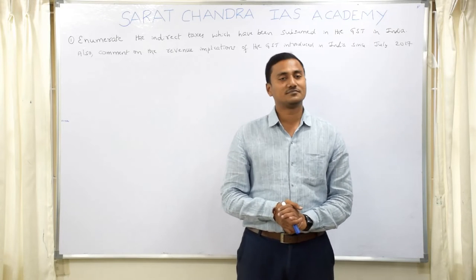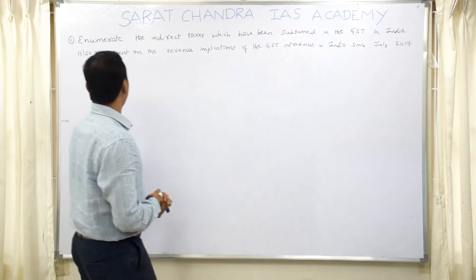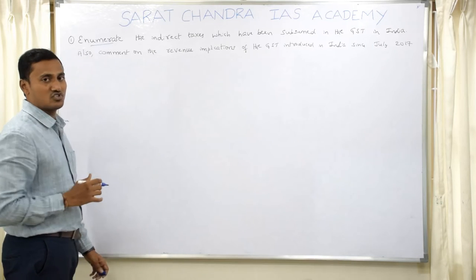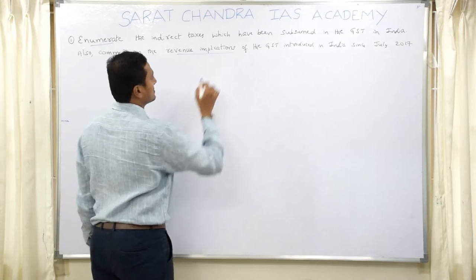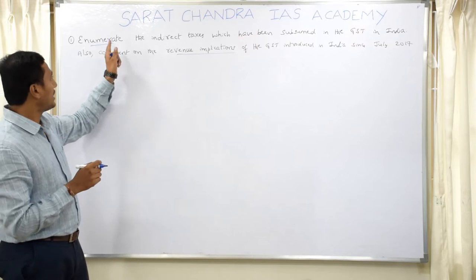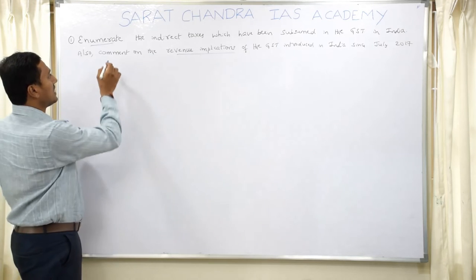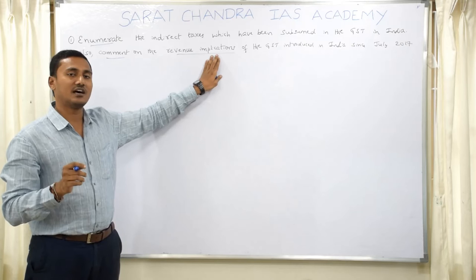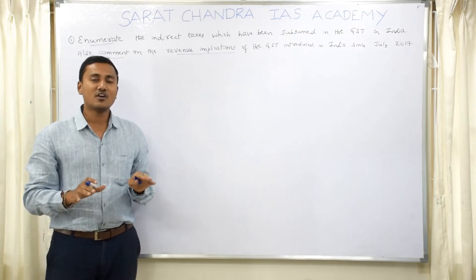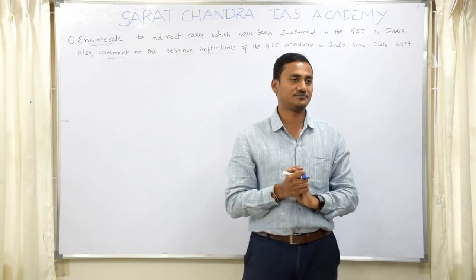In General Studies Paper 3, the first question is about Goods and Services Tax. The question has two parts: first, enumerate all the taxes which have been subsumed in the GST; second, comment on the revenue implications of the GST. The first part requires you to enumerate — not explain — the various taxes under GST. For the second part, you must specifically mention the revenue implications on both central and state governments and write your opinion on them.